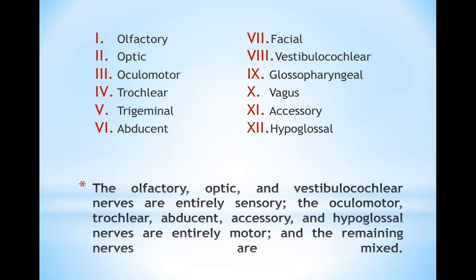Also, the oral cavity and the related structures and regions all are supplied by this particular nerve. So, we are going to continue in discussion of the rest of the cranial nerves. In the lectures of the previous year, all the cranial nerves emerge from the brain in a specific sequence, and this sequence is the specific number that we are going to do with Roman numbers.